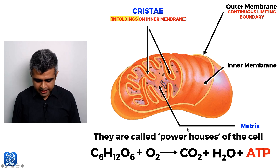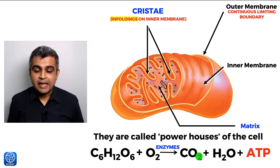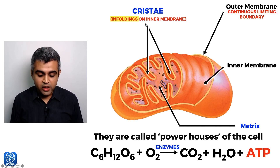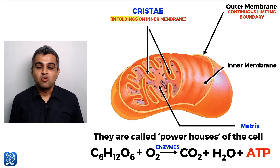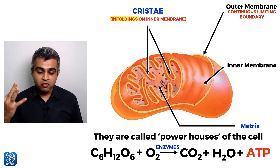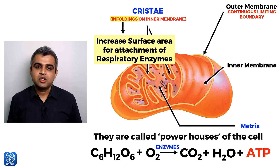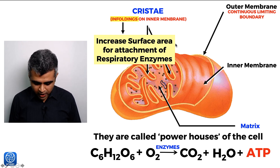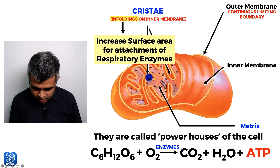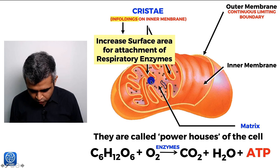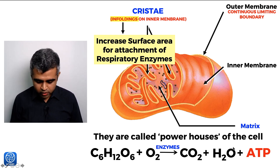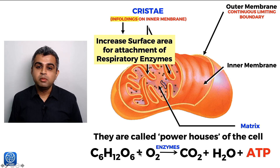This is important in today's discussion because to carry out the respiration reaction inside the mitochondria — inside the powerhouse of the cell — you require enzymes. And this brings us back to the cristae, which are infoldings that increase the surface area. The reason for this increased surface area in the mitochondria is to increase the attachment of respiratory enzymes. More surface area means more enzymes can be attached, more enzymes means more reaction, and more ATP can be generated.